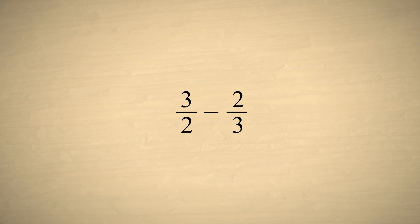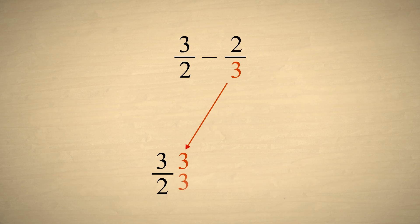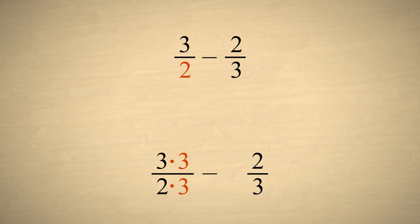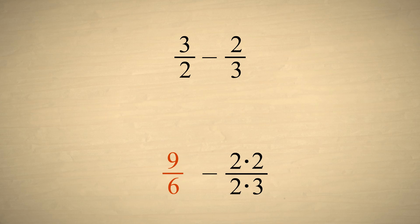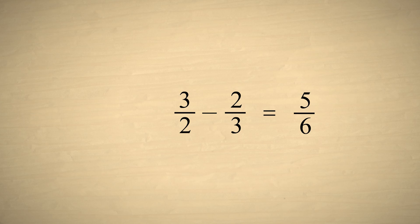One last example: subtracting the fraction three-halves minus two-thirds. Once again, to create a common denominator, we multiply the top and bottom of the fraction three-halves by the denominator of two-thirds. And we multiply the top and bottom of the fraction two-thirds by the denominator of three-halves. This gives us nine-sixths minus four-sixths, which is equal to five-sixths. So three-halves minus two-thirds is five-sixths.